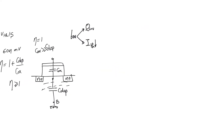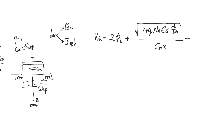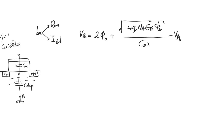Looking at the expression for threshold voltage, it equals 2 times the body potential — the deep bulk potential — plus the square root of 4 times q times N_A (the doping level in the body) times the permittivity of silicon times the body potential, divided by C_oxide, minus V_flatband. These three terms represent different things: the first is the band bending needed for strong inversion; the middle term is the charge coupled through the oxide to the channel; and the third is the work function difference between the substrate and the gate.